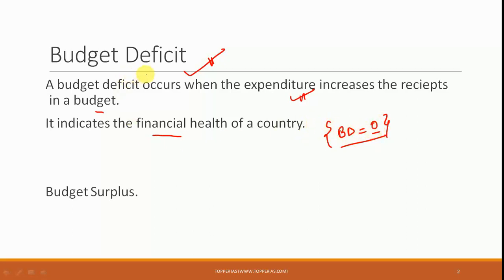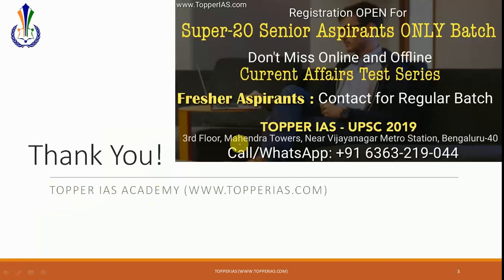Once you've understood budget deficit, another term — budget surplus — is also something you can clearly understand. A budget surplus occurs when the receipts are greater than the expenditure in a particular budget, and the government is going to have a surplus. So that's all for today's discussion. Thank you all for watching.